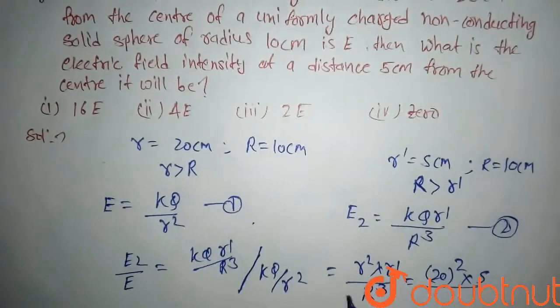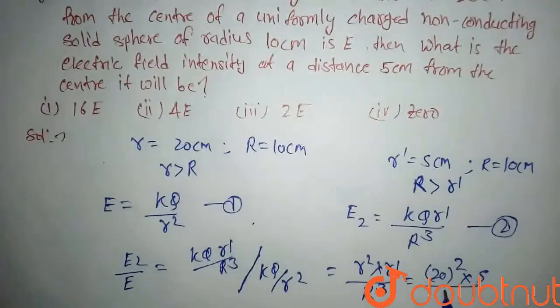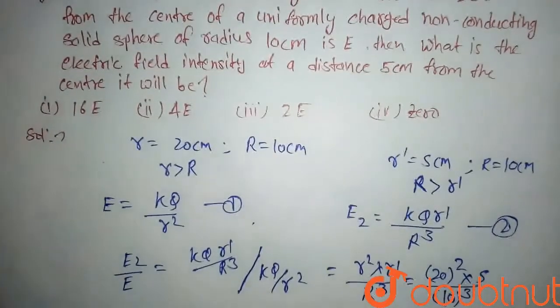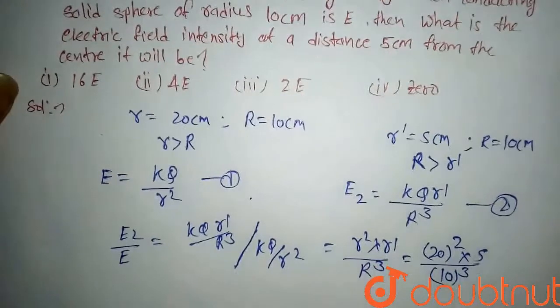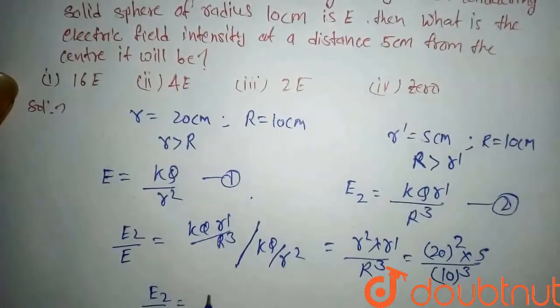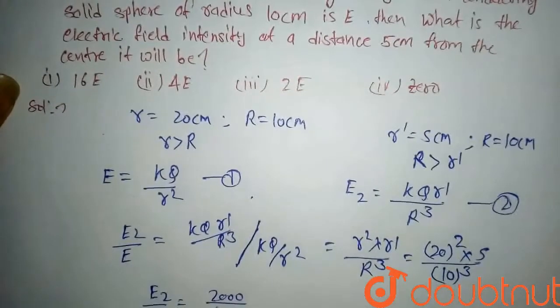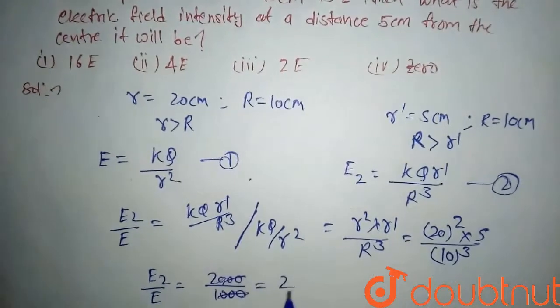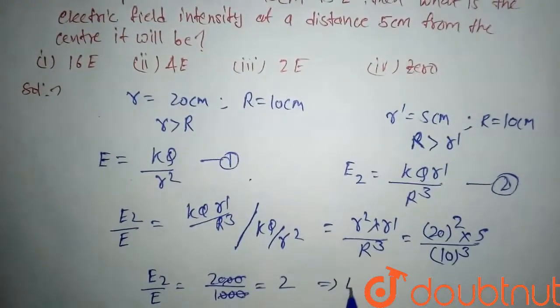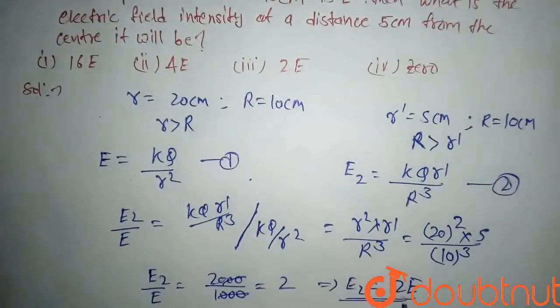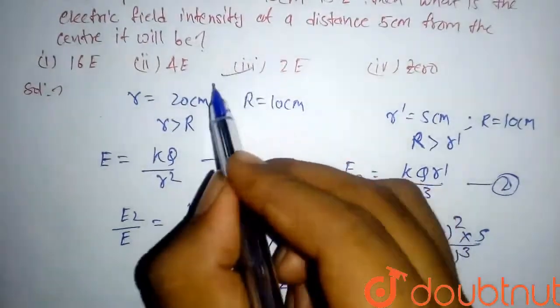Is 5 upon capital R is 10 cube. So after solving it we will get here E2 upon E equals to 2000 upon 1000, so it will be 2. So our E2 becomes 2E, so this will be our answer and our option will be third option.